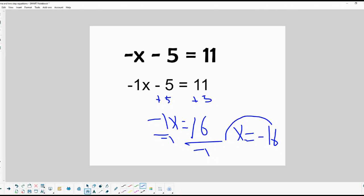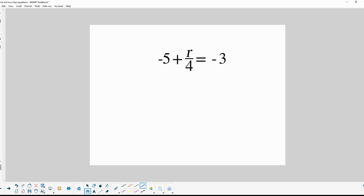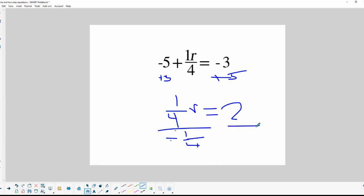We're getting to the last two examples. So here's one that we've got a variable by itself, or x actually being divided by 4. You can put a 1 in front of it. It's not totally necessary in this case because you've got a 4 underneath it. So we'll add 5. We end up with one-fourth r equals 2. So if we divide by one-fourth, 2 divided by one-fourth equals 8. So in this case, r is going to equal 8. 8 divided by 4 gives you 2, or one-fourth of 8 is 2.